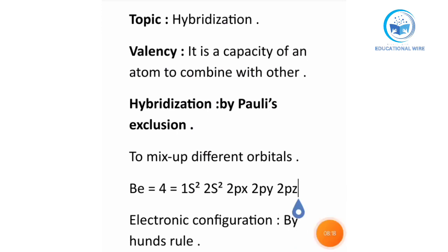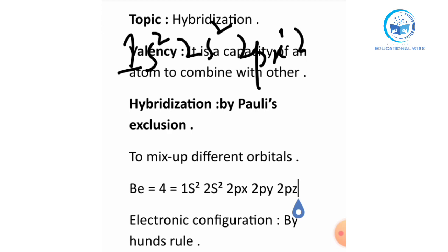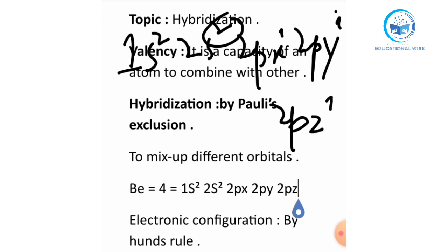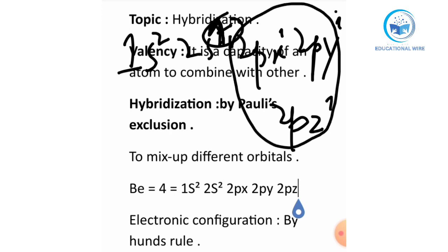Same applies to carbon. In carbon, after the heat reaction, the configuration becomes 1s2, then 2s gets excited. We get 2s1, 2px1, 2py1, and 2pz1. So 2px, 2py, and 2pz all three have one unpaired electron each. That means carbon has three valence electrons — wait, actually four valence electrons including 2s1, with x, y, and z all having valence electrons.